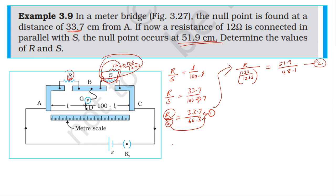R by S is equal to 33.7 divided by 66.3. Substituting in place: 33.7 divided by 66.3. The right side will be S into 12 divided by 12 plus S, giving 51.9 divided by 48.1.